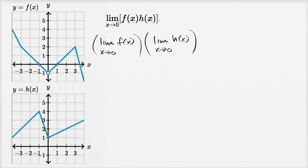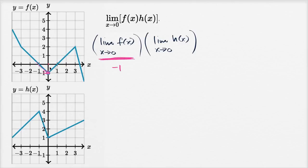Let's first think about f of x. On f of x, as x approaches zero, notice the function itself isn't defined there, but we see when we approach from the left, the function seems to be approaching the value of negative one. And as we approach from the right, the function also seems to be approaching the value of negative one. So this limit is negative one.